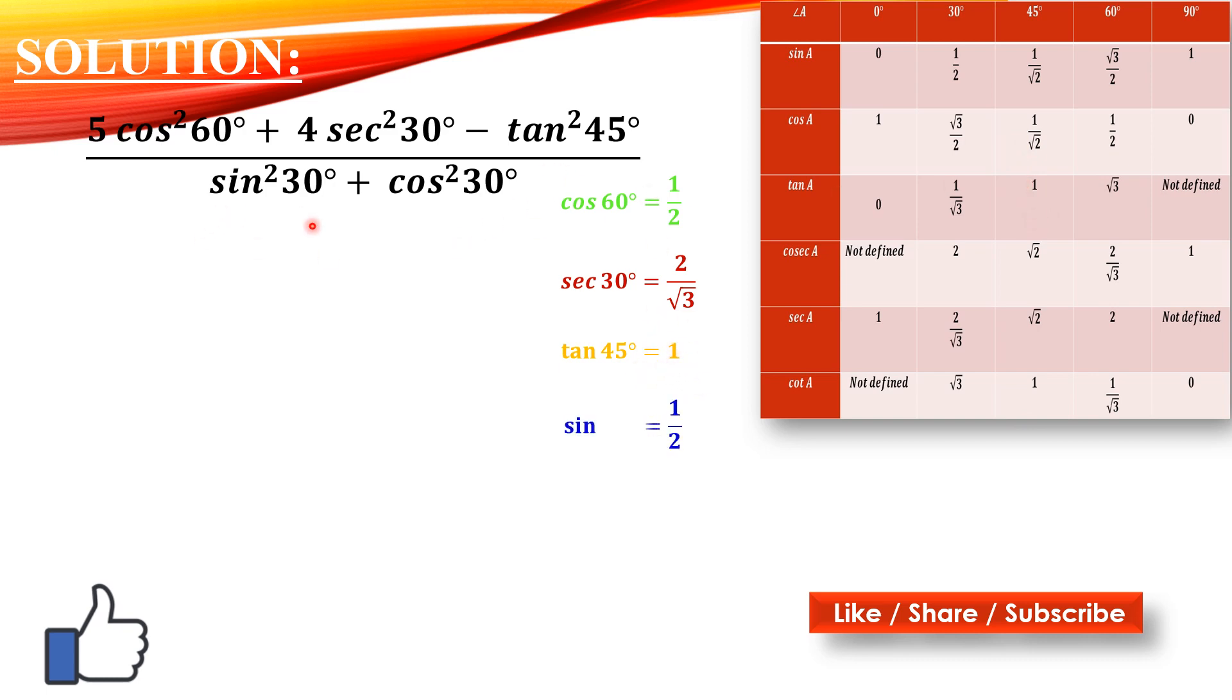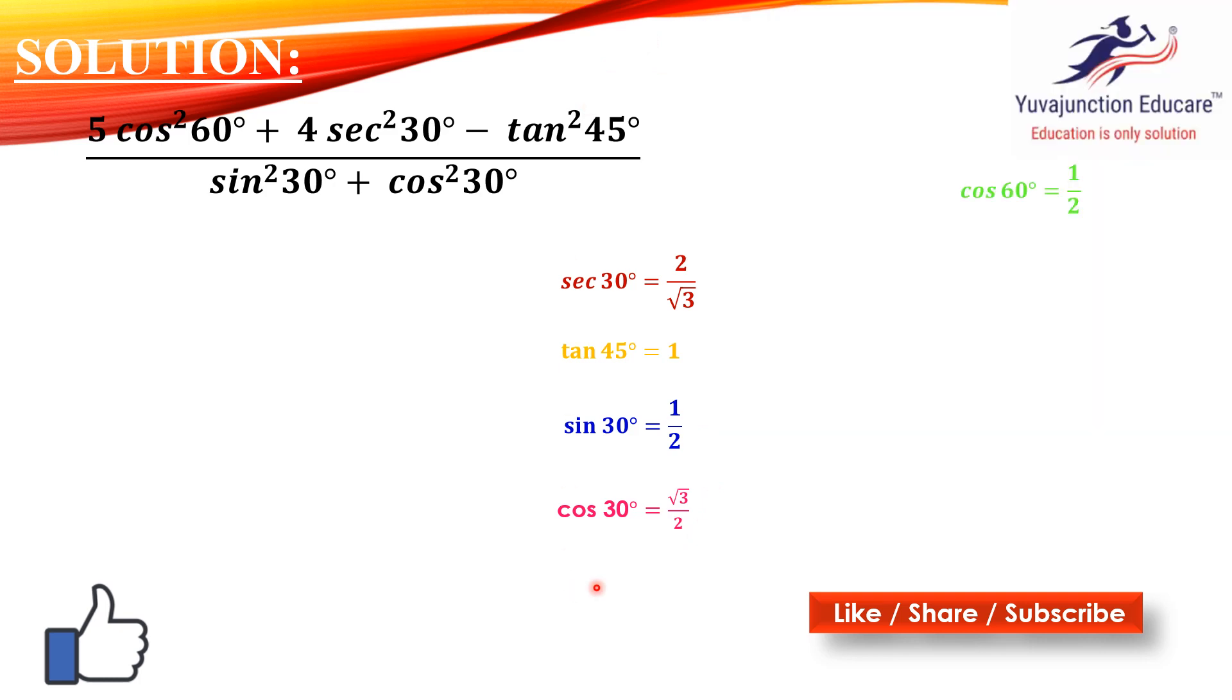Then sin²30, so sin 30 value should be given, so we should write 1/2. Cos 30, cos 30 value is how much? √3/2. We have noted down here. We will write it here: cos 60 is 1/2, sec 30 is 2/√3, tan 45 is 1, sin 30 is 1/2, and cos 30 is √3/2.